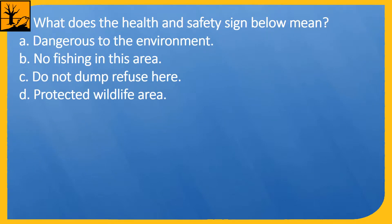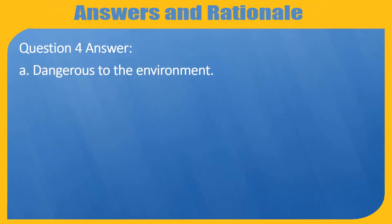Question 4. What does the health and safety sign below mean? A. Dangerous to the environment. B. No fishing in this area. C. Do not dump refuse here. D. Protect in wildlife area. Question 4 answer: A.